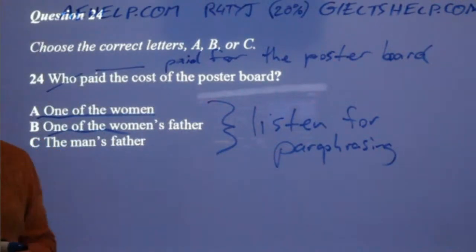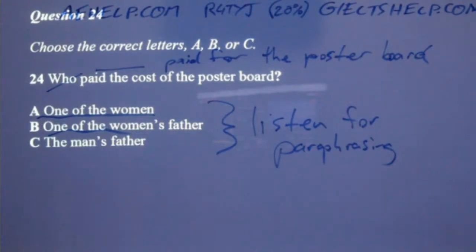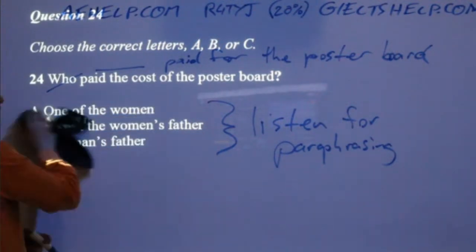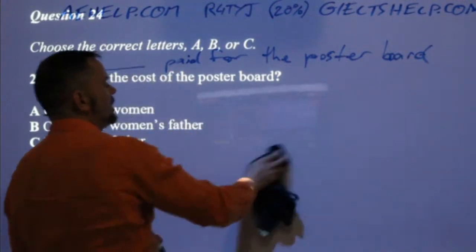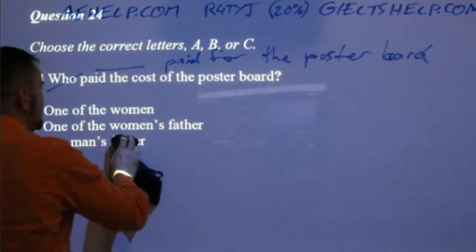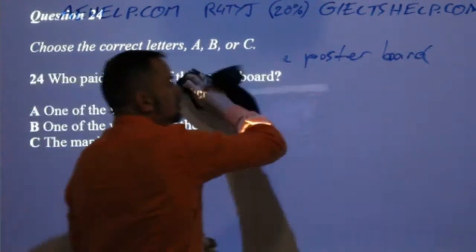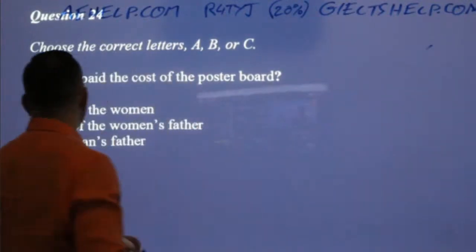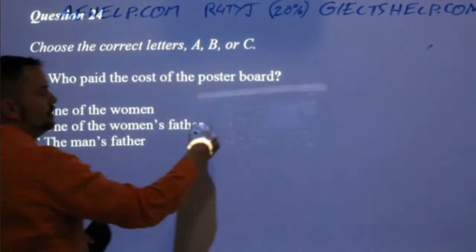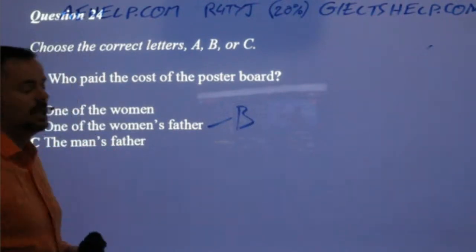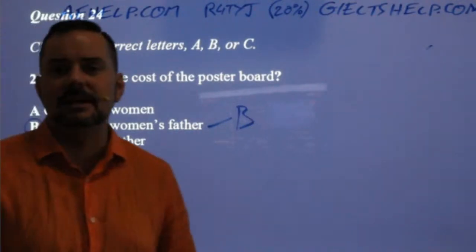Natalie says 'dad.' Yeah — very good. That was the paraphrasing, Natalie. The woman says: 'Don't worry about it, my dad paid for it anyway.' So the correct answer here is B — one of the women's fathers paid for it. And she actually says 'my dad paid for it.' Now you have to be careful because at first she says 'I got the poster board already,' so it sounds like one of the women is the correct answer. Then when the other project members say 'we'll give you one pound each,' she says 'Oh, don't worry about it — my dad paid for it anyway.'